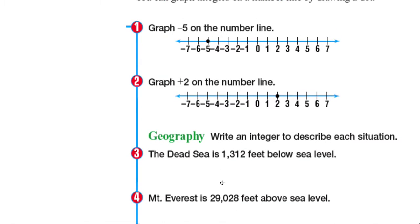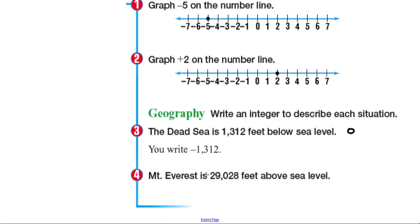Geography: write an integer to describe each situation. The Dead Sea is 1,312 feet below sea level. And let's say for a fact that sea level is our 0. So therefore, 1,312 feet below sea level is actually negative 1,312.